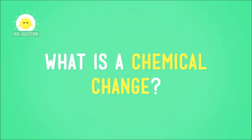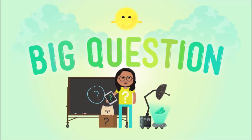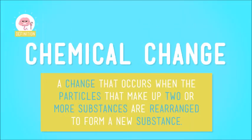But what is a chemical change? A chemical change is a change that occurs when the particles that make up two or more substances are rearranged to form a new substance.